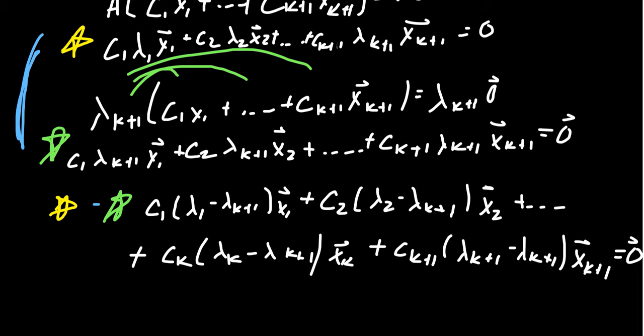All right, so now we've reached the point where we're going to actually benefit from the ingenuity of how we constructed this argument. You'll notice this very last term. We have lambda K plus 1, minus lambda K plus 1. That's the same number. That's going to cancel out. So this whole last term disappears in the sum. And so looking at the left-hand side, we now have a multiple of X1 plus a multiple of X2 all the way up to a multiple of X K that equals zero.